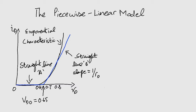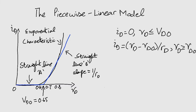The straight lines can be described mathematically as Id equals zero for Vd less than or equal to Vd0, and Id equals Vd minus Vd0 over Rd for Vd greater than Vd0.